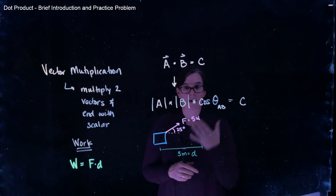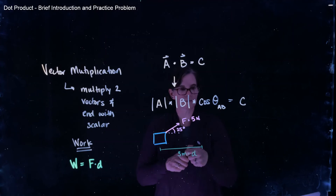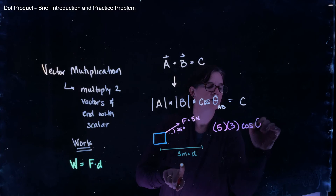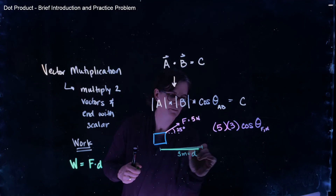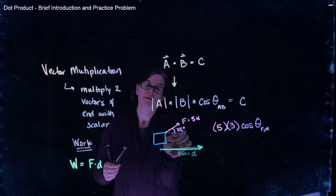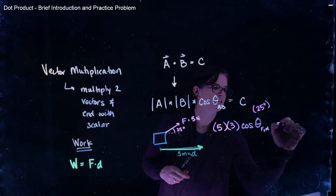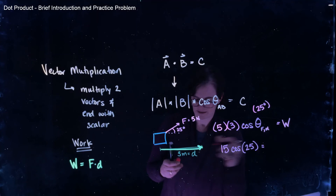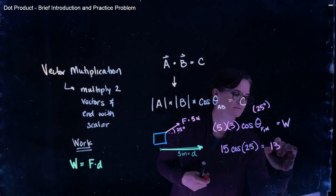I want to determine the work done on this box by that force, so I take the dot product of the force and the displacement. The magnitude of the force is five, the magnitude of the displacement is three, and the angle between the force and the displacement is 25 degrees. Five times three is 15, times the cosine of 25 degrees, which equals 13.6 joules.